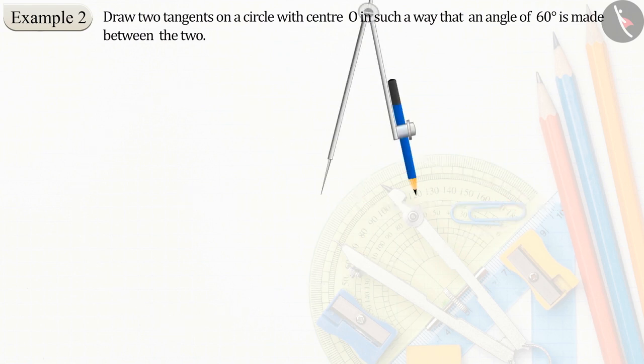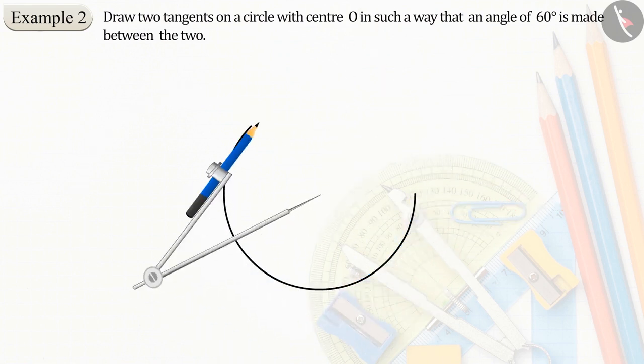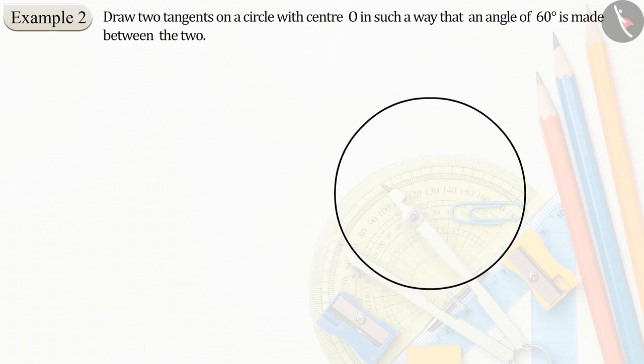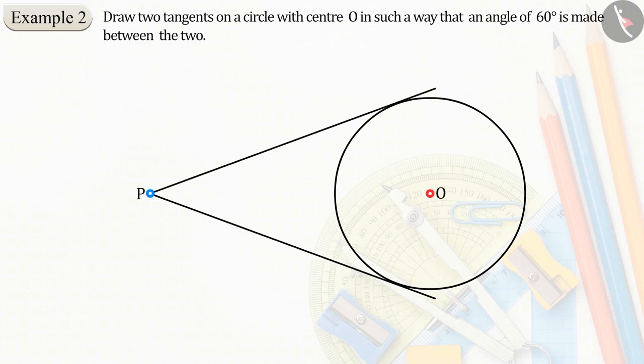First of all, what we'll do is, we'll make a rough diagram for this. In which a circle whose center is O, which has two tangents, let them be PA and PB, between whom an angle of 60 degrees is formed. Now we can take these points A and B and connect them to center O, which gives us the quadrilateral PAOB.